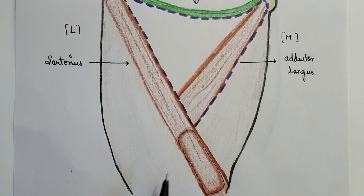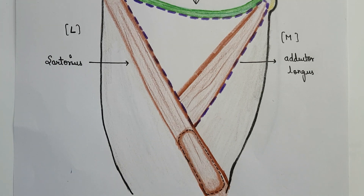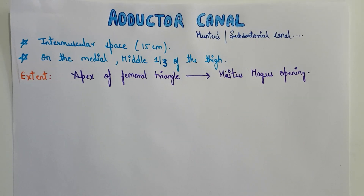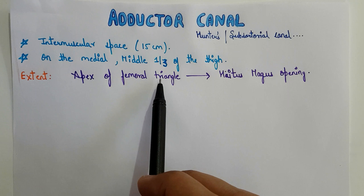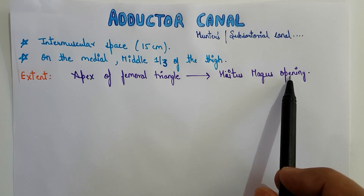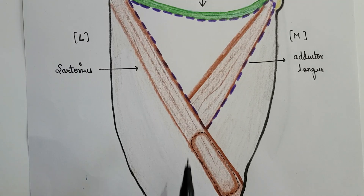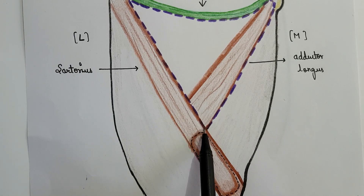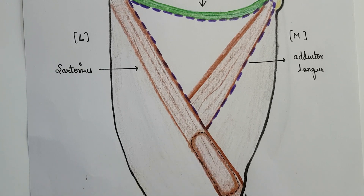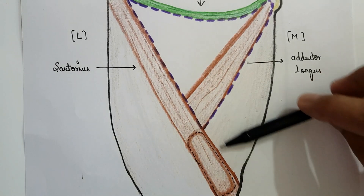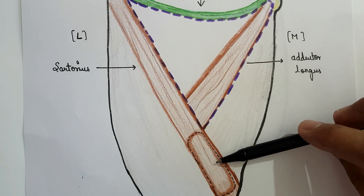The black dotted line represents the adductor canal, which is present beneath the sartorius muscle. The adductor canal extends from the apex of the femoral triangle to the hiatus magnus opening. The hiatus magnus is a small opening in the adductor magnus muscle. This is the apex of the femoral triangle — the point where the medial and lateral borders meet. The canal is around 15 centimeters in length.